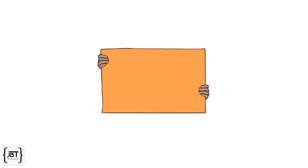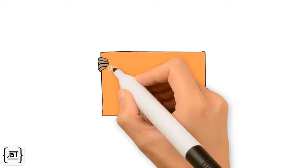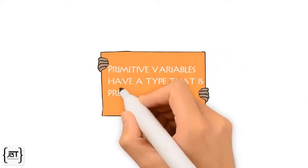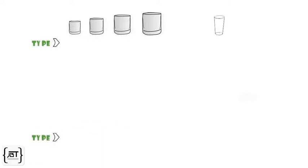Let us look at primitives first. Primitive variables have a type that is predefined by the language. Containers can come in different sizes. Similarly, primitive variables have a size according to the value it needs to hold. The size of the variable is determined by the type it is declared with. There are eight primitive types in Java.